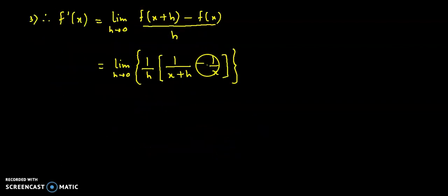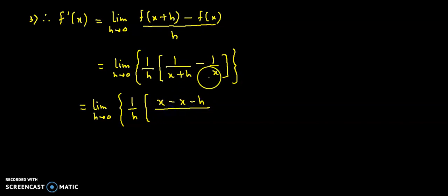Ab andar hum yahan par denominators equalize karte hain. So we have limit as h approaches 0, 1 by h times, let us equalize x into 1, ye dete hain x minus, minus 1 into x plus h, minus x minus h divided by denominator mein aayega x into x plus h. Now x cancels with minus x.